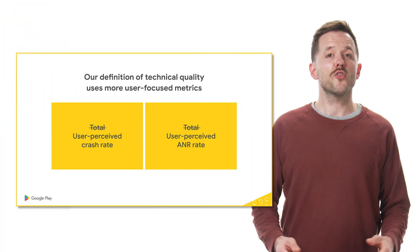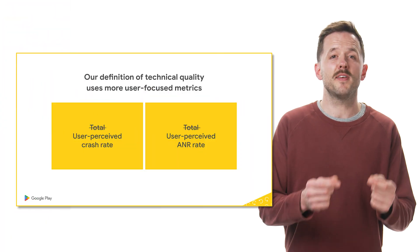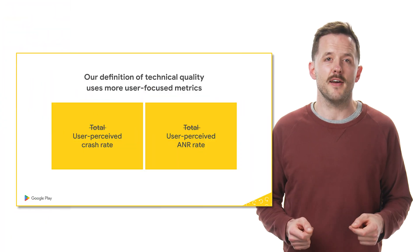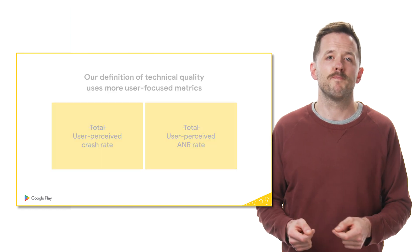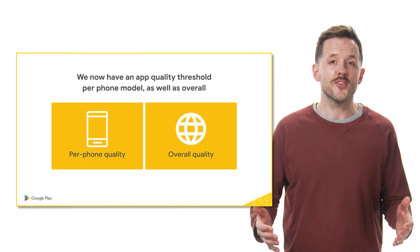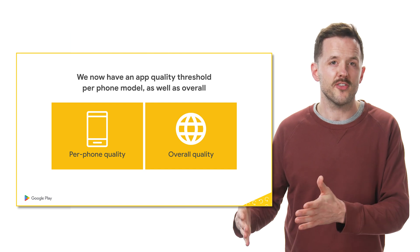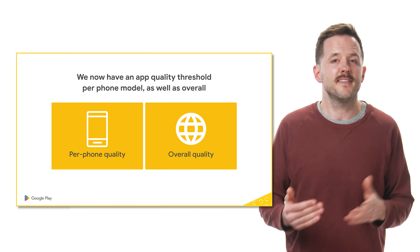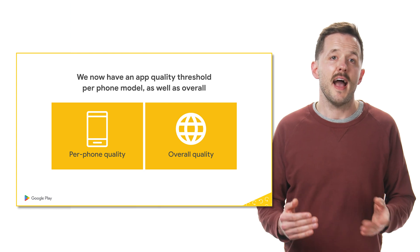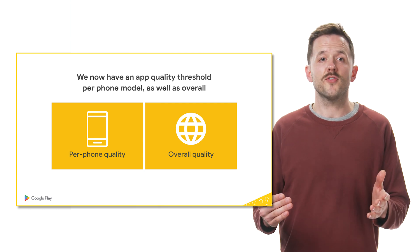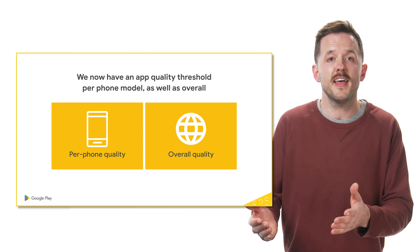Number two, we've improved a number of app quality metrics that you see in the Play Console. Total crash and ANR rates are now user perceived crash and ANR rates. This helps you prioritize issues that are most visible to users. You'll also now see per device quality thresholds. This reflects the fact that technical quality can vary from device to device, and this will also help users choose the best experience for their device.